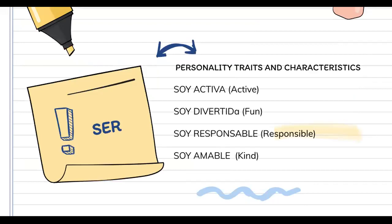Really shortly, you can just remember it by thinking that ser — you use it only when you're describing personality traits and characteristics. So it is something that is long term. Soy activa, soy divertida, soy responsable y soy amable — I am active, fun, responsible and kind. These are personality traits that do not change regularly. It's something that you can see as long term.